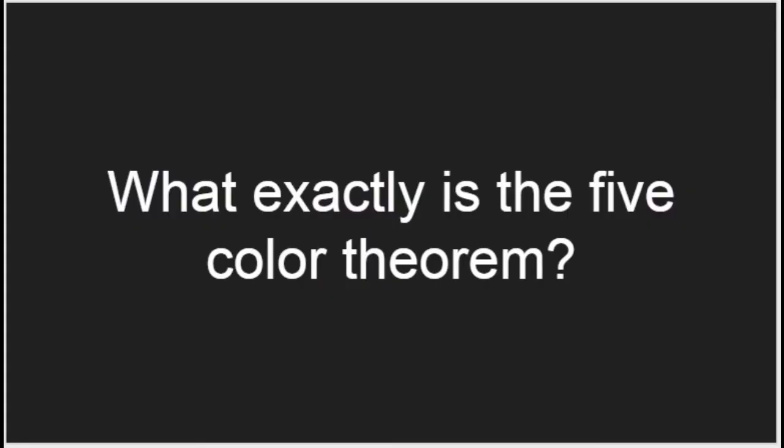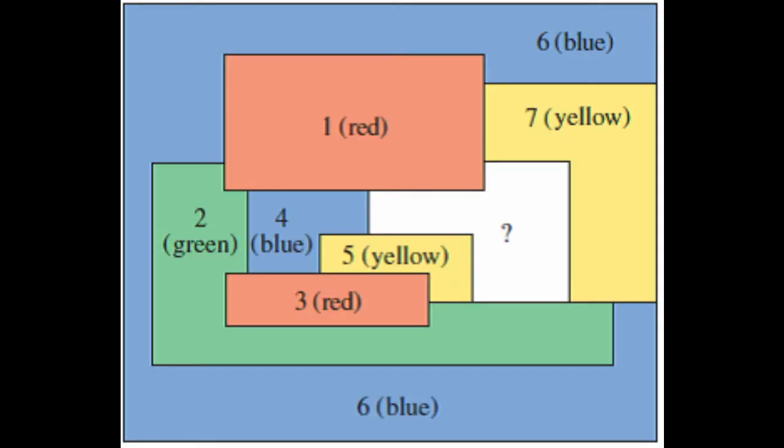What exactly is the five color theorem? The five color theorem states that any planar graph or picture is five colorable. That means that any two adjacent shapes on any picture will be two different colors if there are at least five possible colors to use. Here is an example of an abstract five color map. Notice how all four colors are touching the white circle — we are forced to introduce a fifth color in order to complete the map.